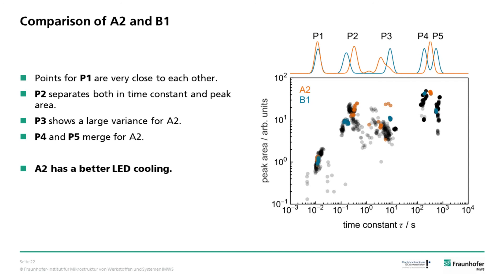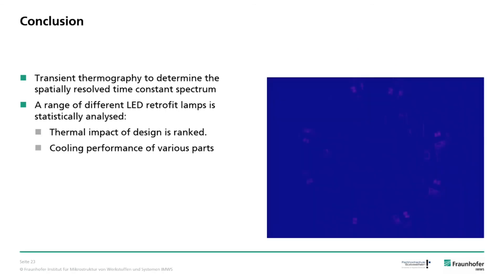To sum up these findings, it can be concluded that lamp A2 has better LED cooling. Let's conclude my talk. I presented a method which allows to calculate the time constant spectrum for each pixel of a thermographic image sequence. This method was used to analyze and compare different LED retrofit lamps, where we looked at the cooling performance of different parts.